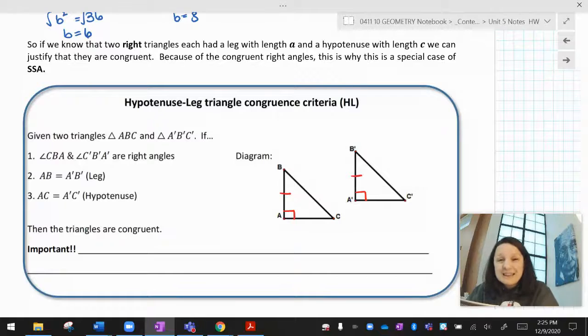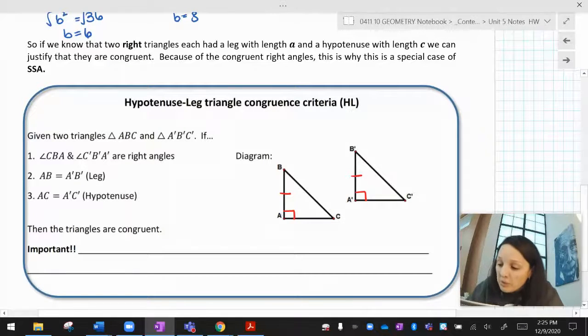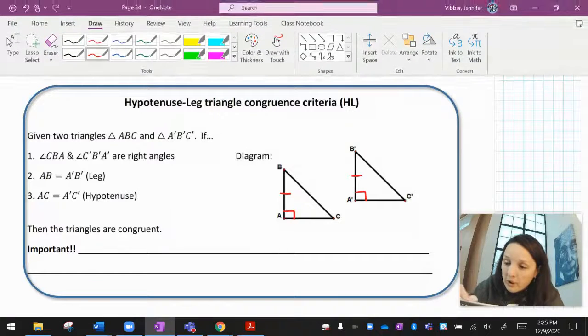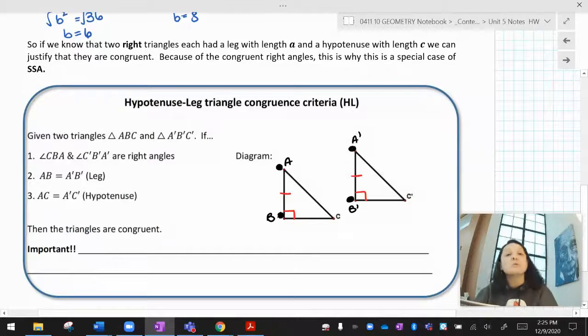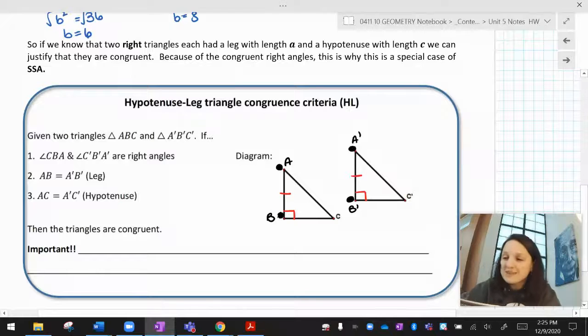Before we start this problem, I got to tell you, I accidentally put a letter in the wrong place. So I need you guys to fix that for me. Or else this isn't going to make any sense. This is supposed to be a B and that's supposed to be an A. This is supposed to be a B prime and that's supposed to be an A prime. So if you could fix that, that would make the rest of this make sense. So first fix that typo. I apologize for it.